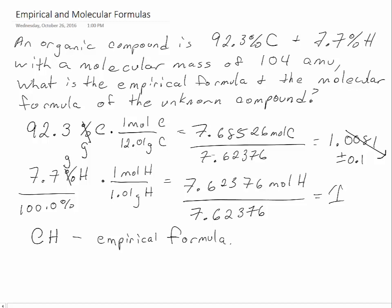Did we use the 104 AMU at all? We have not used that yet. This is where we use that. This empirical formula has a mass of 13.02, and we want to compare that to the molecular mass of 104. 104 divided by 13.02 gives 7.9877.